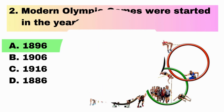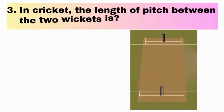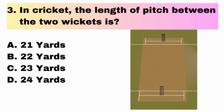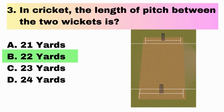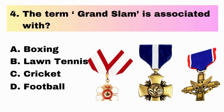Question 3. In cricket, the length of pitch between the two wickets is: A. 21 yards, B. 22 yards, C. 23 yards, D. 24 yards. Answer is B. 22 yards.